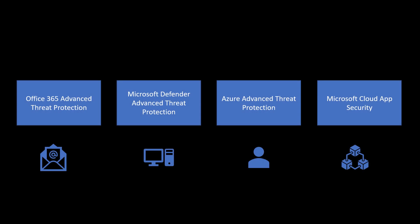We'll start with rebranding because this is something which is very important and which will act as a foundation in terms of knowing what is XDR. What you see here are four different products which typically exist to protect your different digital estates belonging to M365. The first one is email, which is secured and protected by Office 365 ATP. Then we have endpoints, which is secured and protected by Microsoft Defender ATP.